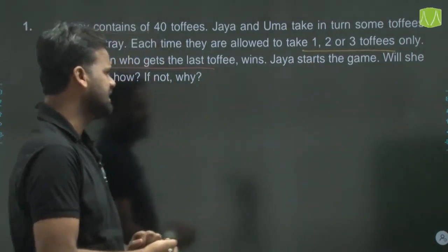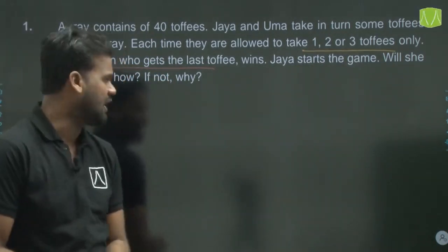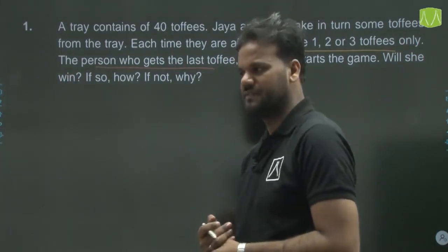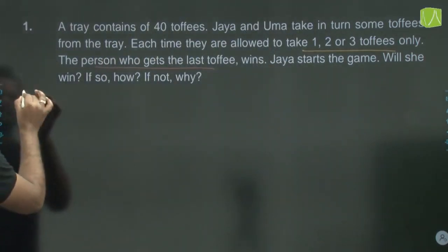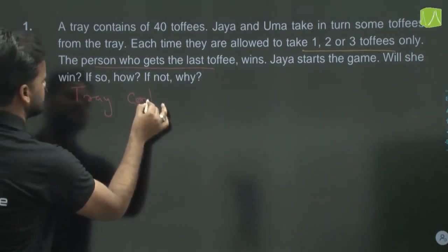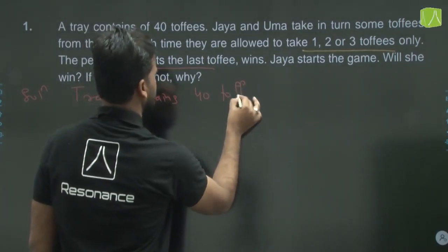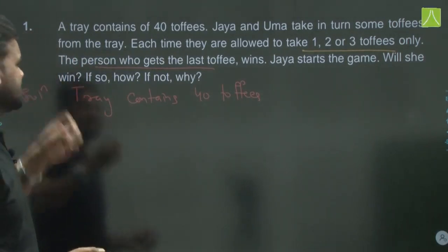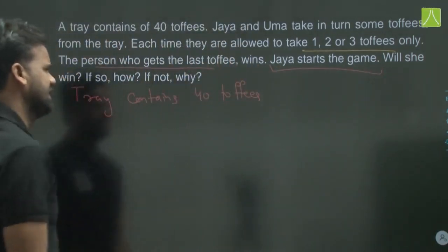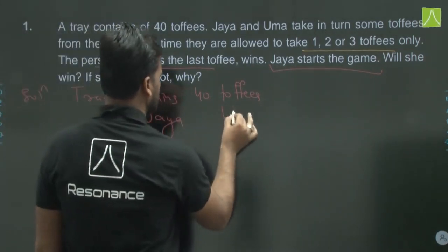Jaya starts the game. The question asks whether Jaya wins or not, and you have to give justification for your answer. There are 40 toffees in the tray. Jaya starts — let's say Jaya picks three toffees, then Uma picks some — suppose one toffee.